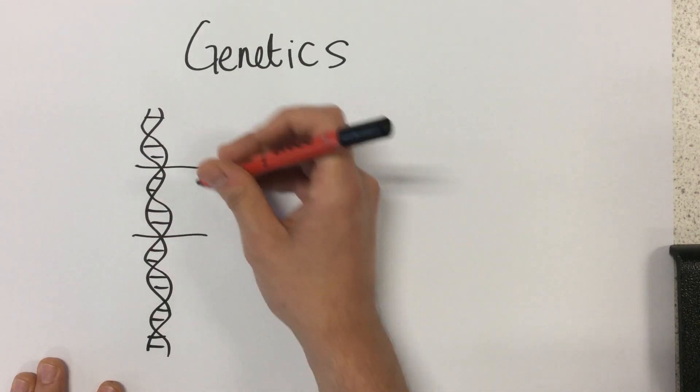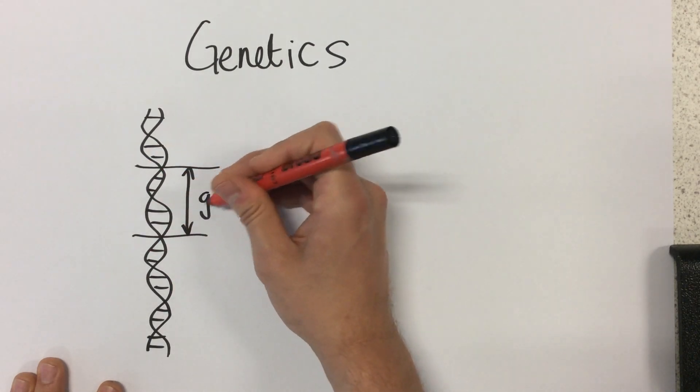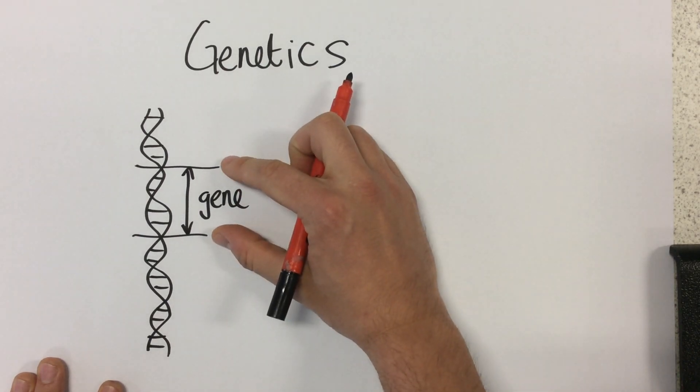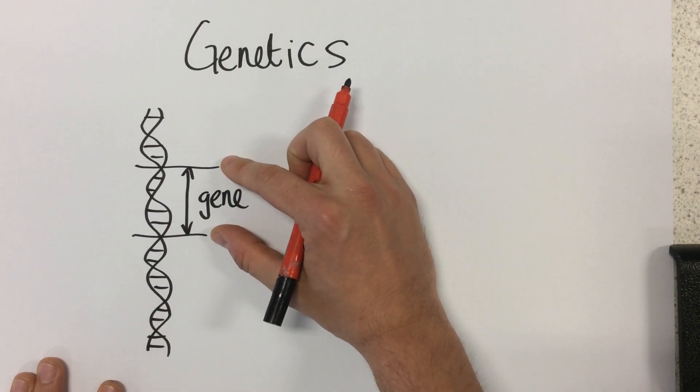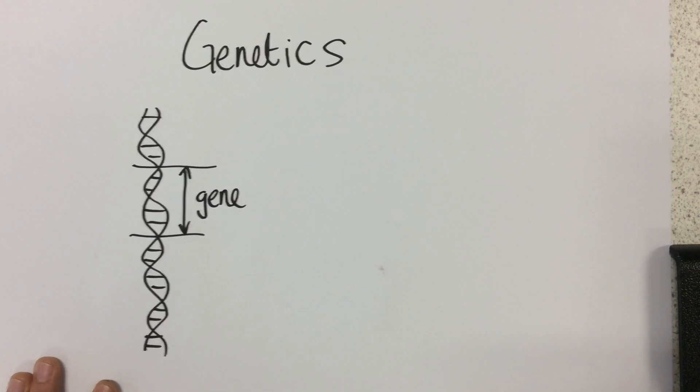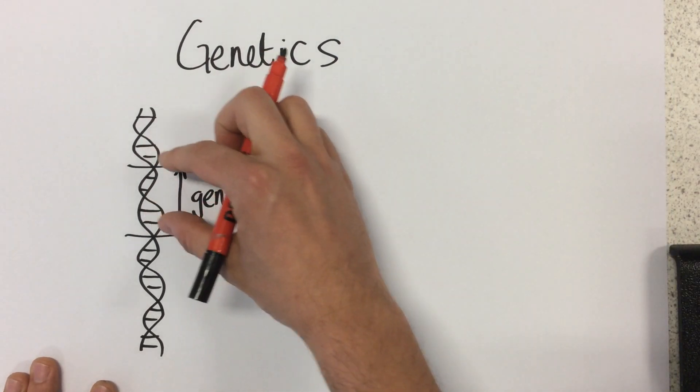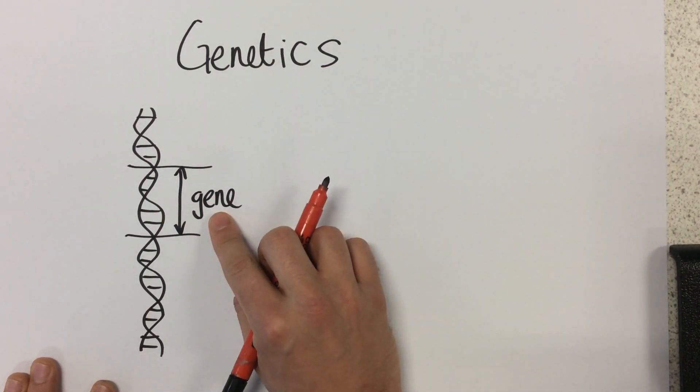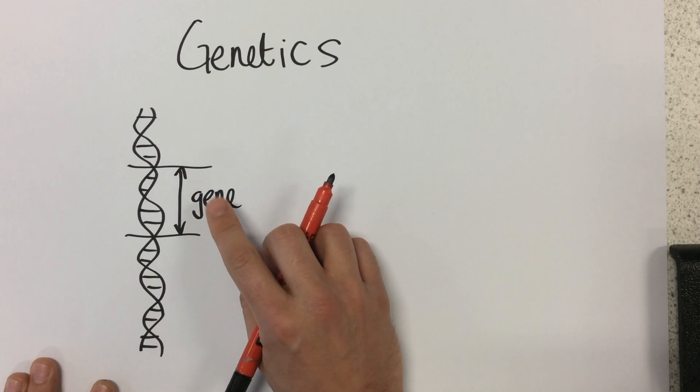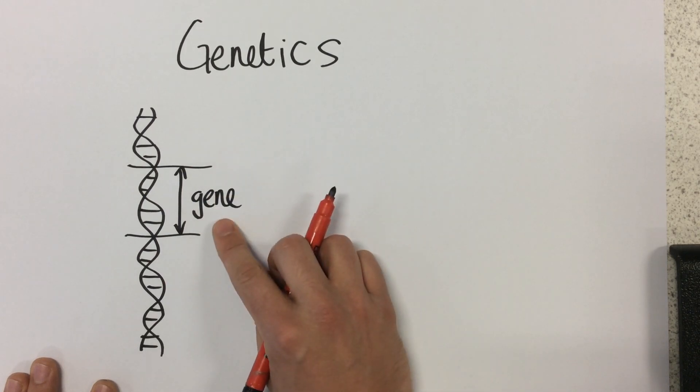A section of this DNA is called a gene. Now what this section is, is it's a code, a list of instructions of how to make any protein in the body. So if we have this particular gene here, this gene could be for eye color, it could be how to make a particular enzyme, then we could make that particular protein.